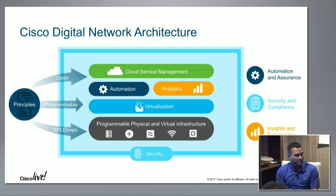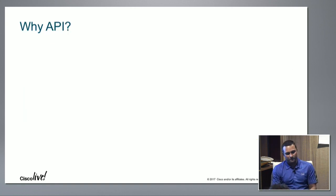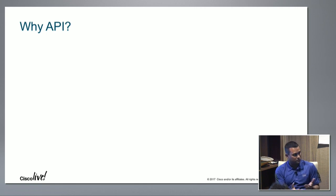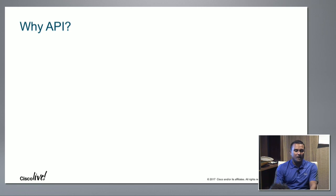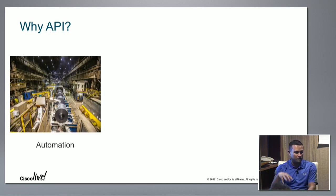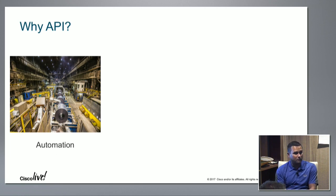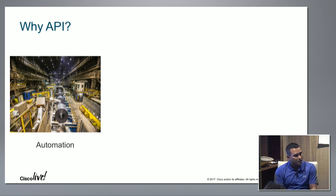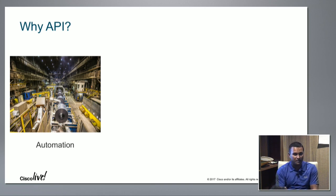All of APIC-EM's functionality is exposed by APIs — there is no hidden communication. We have applications for everything already: for Easy QoS, path trace, plug-and-play, IWAN — all of that is there as built-in applications. So the question becomes: why do we need APIs? One of the main things is automation. All of the applications we are building on APIC-EM use these same APIs. Even though you have a built-in UI, say plug-and-play — if you have 500 devices coming up, do you really want to input 500 serial numbers via the user interface? If you have an API, you can write a small Python script that does all of that for you automatically.